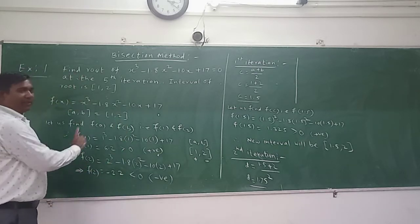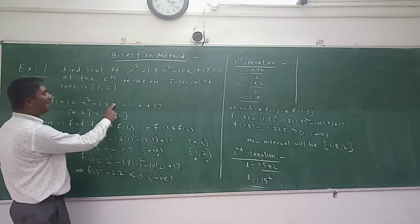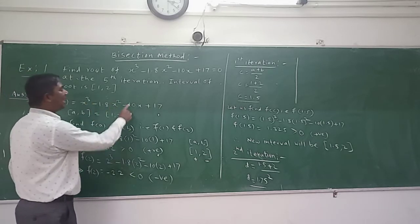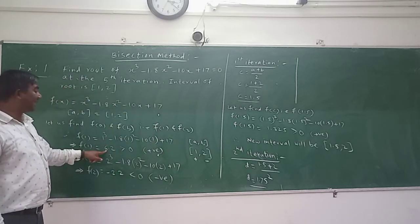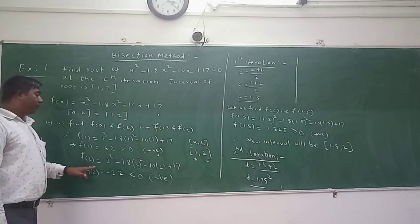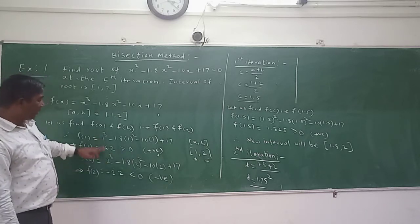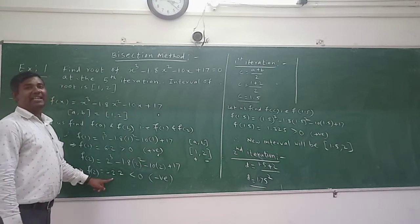So f of 1, you can see it is 1 cube minus 1.8 into 1 square minus 10 into 1 plus 17. So if you calculate it will be 6.2, it is positive. So f of 2, if you calculate just replace 1 by 2 in the same function, it is a negative value.